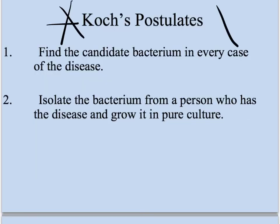Here's the really important stuff — you do need to write these down. So Koch's postulates: we use Koch's postulates to prove that a certain bacteria causes a certain disease. So after you already have a hypothesis — let's use staph, for example — you have the hypothesis that Staphylococcus aureus causes staph infections. You use Koch's postulates to prove that.